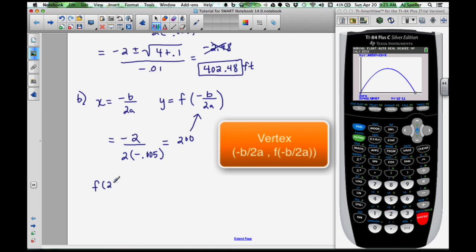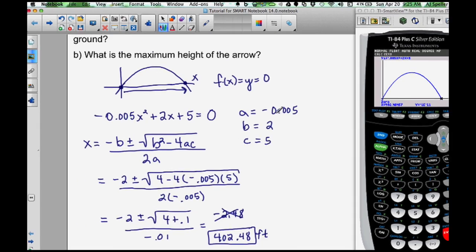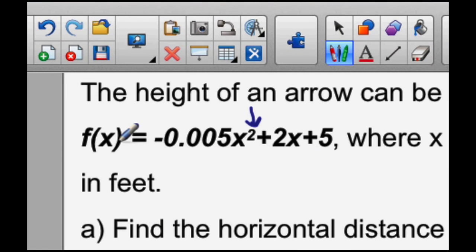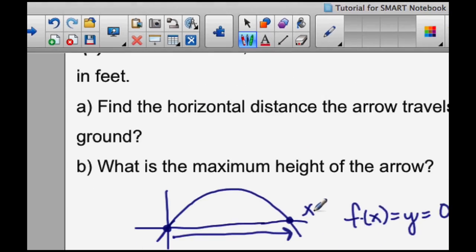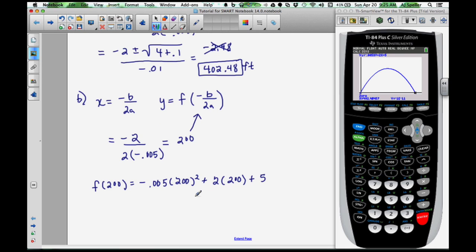So, f(200) will be equal to negative 0.005 times 200 squared plus 2 times 200 plus 5. And again, all I did here was go back to this original equation that we had, and I input values of 200 for each place where I see X. And once I resolve that, that's going to give me the height, or the Y value, for the arrow. And in this case, that's going to come out with 205 feet.